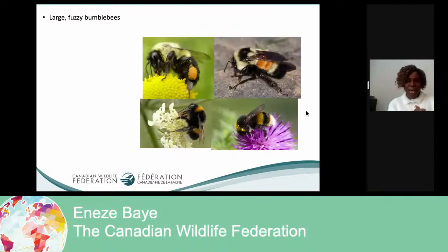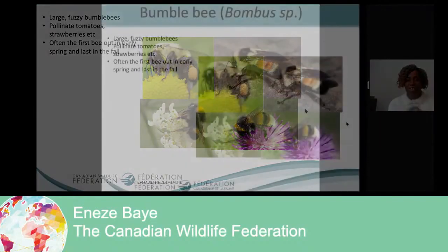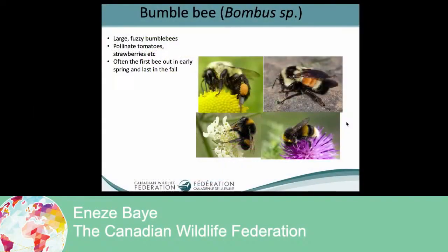And the last bee I'll talk about is the bumble bee. Bumble bees are quite popular in Canada — they are large and they help pollinate tomatoes and strawberries. They are among the first to be out in the spring and also the last in the fall. They can actually visit 10 to 18 flowers in a minute — can you imagine that? They are incredibly fast.